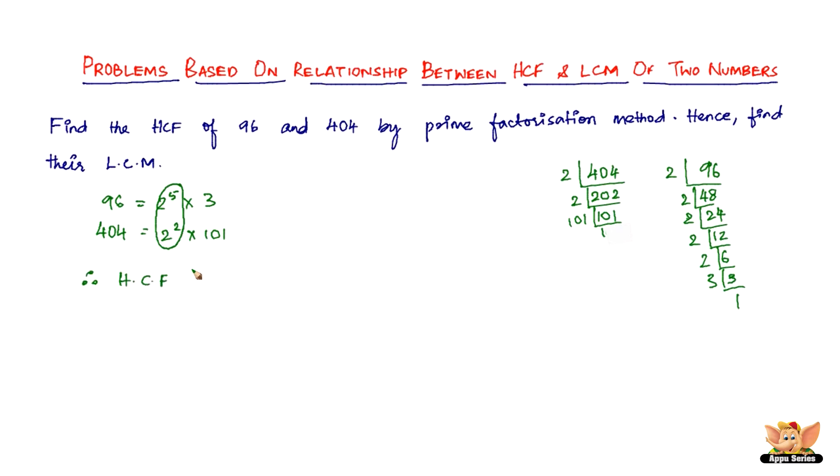Therefore, HCF of 96 and 404 equals 2 square. If I have to elaborate this, it has to be like this: 2 times 2 times 2 times 2 times 2, that is 5 twos, times 3. And then you've got 2 twos and 101. So 101 and 3 don't match, so you've got only 1, 2, and 2 twos matching. These don't count because we're talking about the highest common factor here.